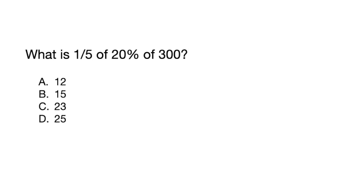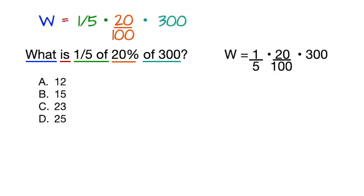Let's try one more example. What is 1/5th of 20% of 300? What means place a variable there. Is means equals. 1/5th of means 1/5th times. 20% is 20 divided by 100. Of 300 means times 300. That's it, there's your equation. Now just simplify on the right side by reducing numbers, and then just multiply what's left over to get W equals 12.